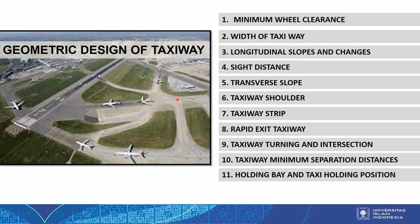There are some components we will learn about for the geometric design of taxiway: minimum wheel clearance, width of taxiway, longitudinal slopes and changes, side distance, transverse slope, taxiway shoulder, taxiway strip, rapid exit taxiway, taxiway intersection, taxiway minimum separation distances, and holding bay and taxi holding position.